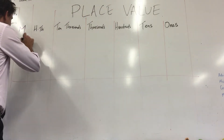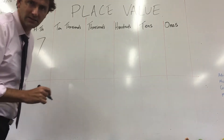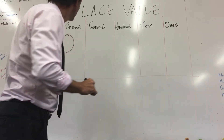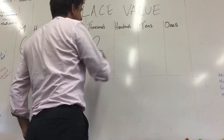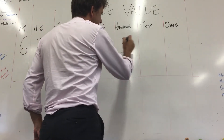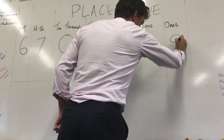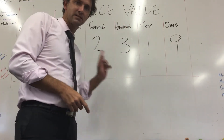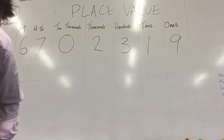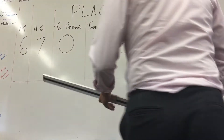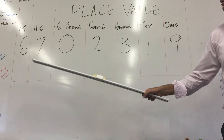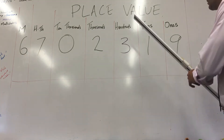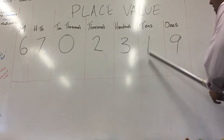I'm going to write a six in the millions column, a seven in the hundred thousands column, a zero in the ten thousands column, a two in the thousands column, a three in the hundreds, a one in the tens, and a nine in the ones. And this chart shows us that this number is six million, seven hundred and two thousand, three hundred and nineteen.